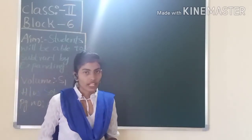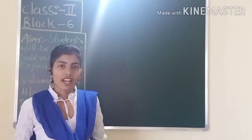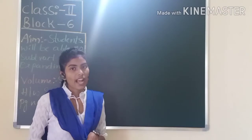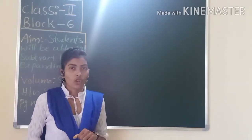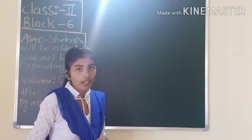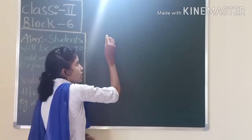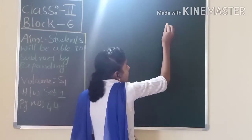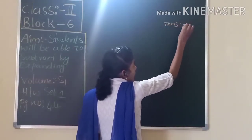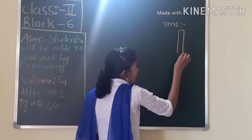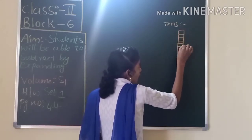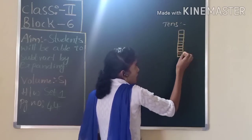Before we start our lesson, do you remember place value blocks? In the previous class we learned about place value blocks. For tens, which place value block will we draw? We will use a tens tower to draw tens. It is just a long strip and it has 10 ones cubes in it.